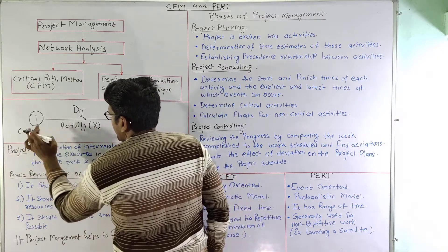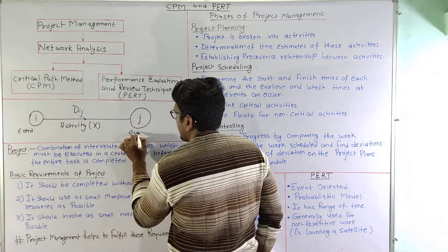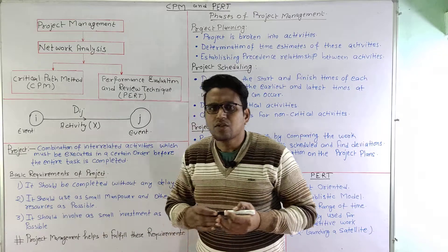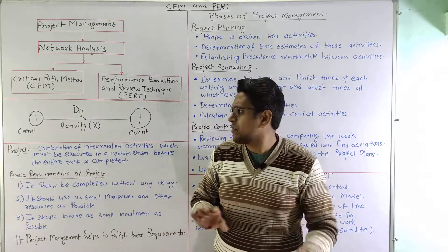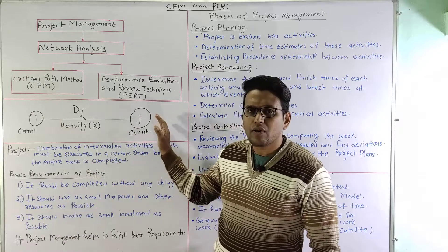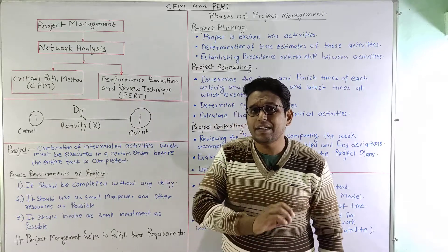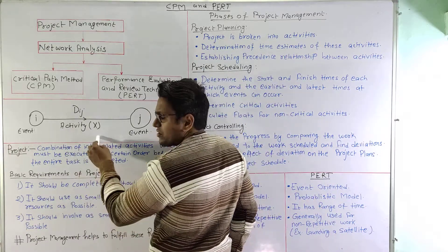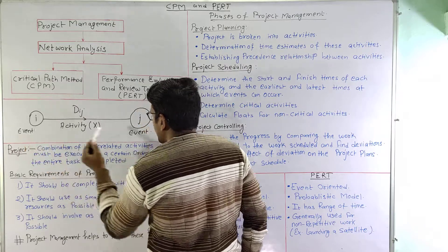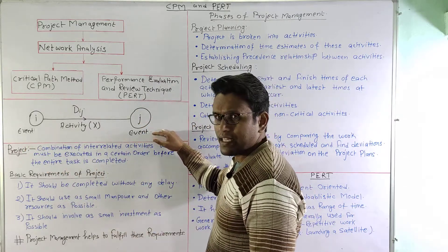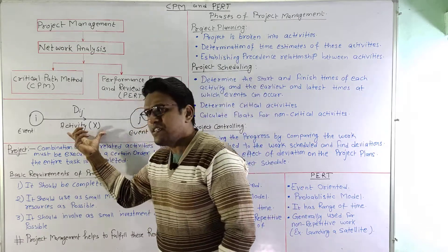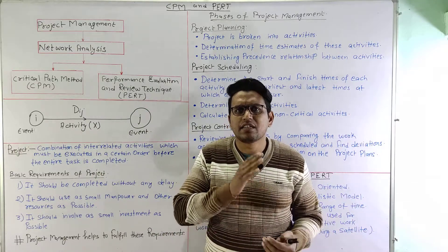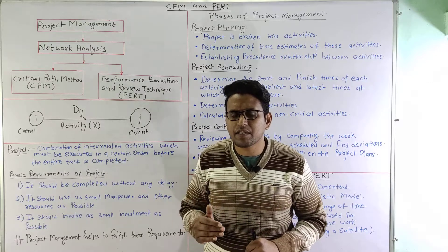The next term is event. The beginning and end point of an activity are called events or nodes. An event does not consume any time or resource. We should understand that an activity consumes both time and resources, whereas an event does not consume time and resources.